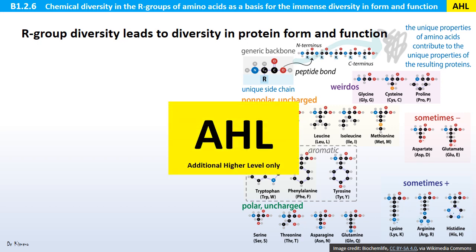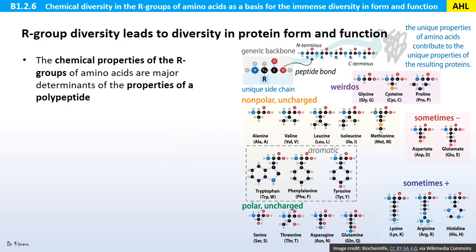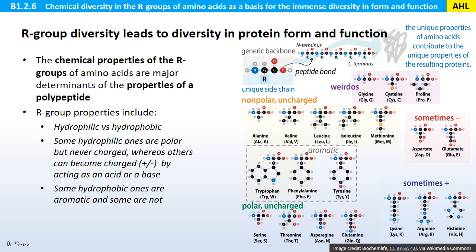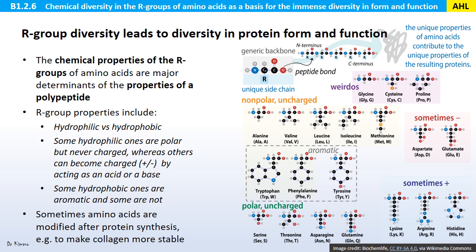Now moving to additional higher level territory. R group diversity leads to diversity in protein form and function. The chemical properties of the R groups are major determinants of the properties of a polypeptide. R groups can be hydrophilic or hydrophobic; some hydrophilic ones are polar but never charged, whereas others can become charged by acting as an acid or a base, and some are aromatic while others are not. Sometimes amino acids are modified after protein synthesis — for example, to make collagen more stable.